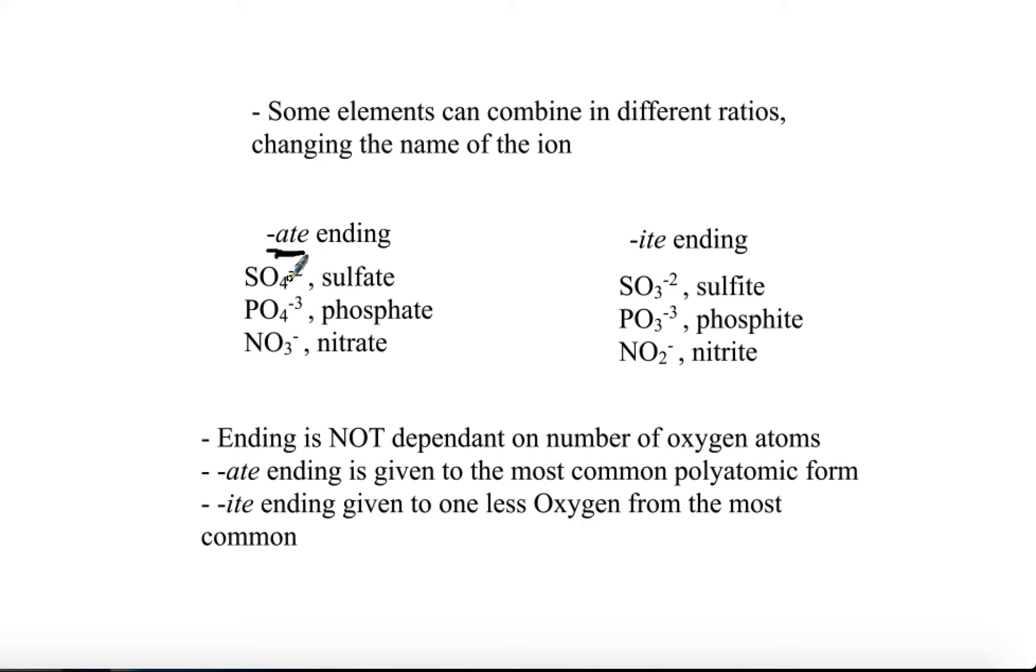SO4, this one to four ratio of sulfur to oxygen appears the most, so it has the sulfate ending. Then you have phosphate, the one to four phosphorus to oxide ratio, and then nitrate, the one to three.